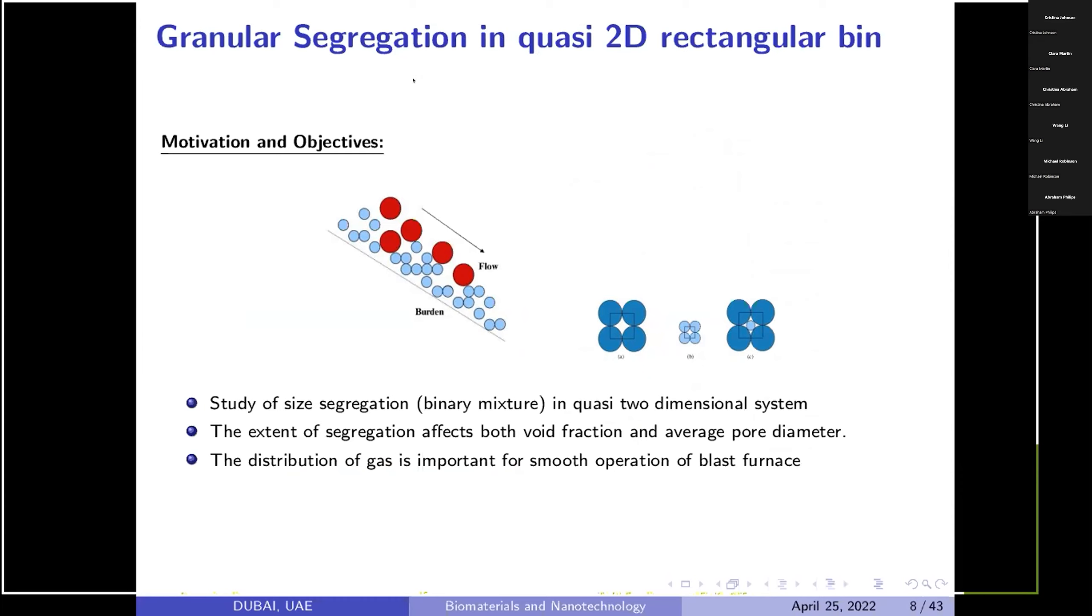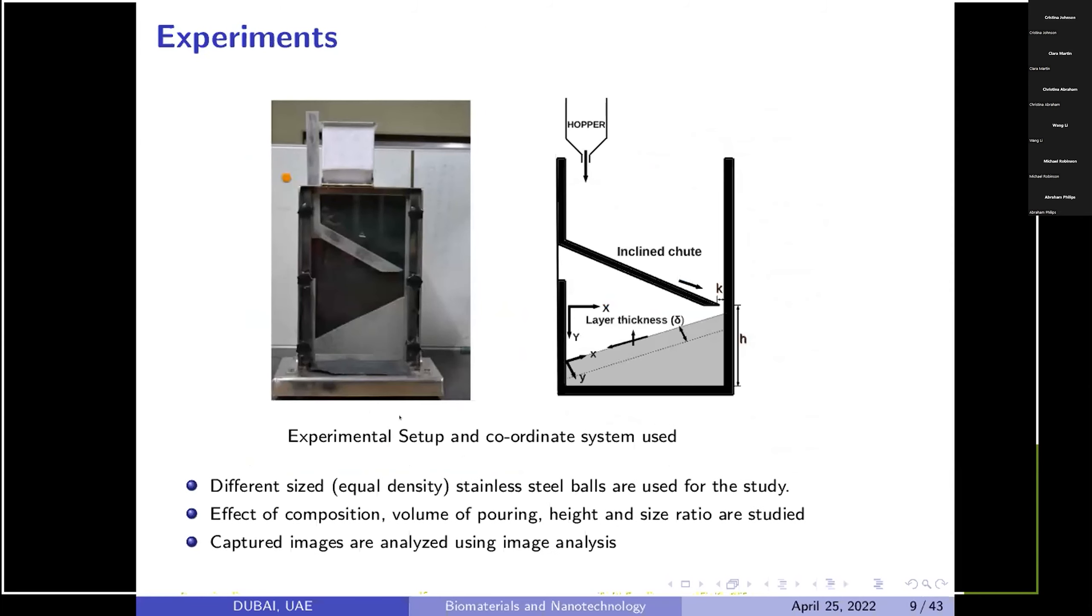To understand how segregation takes place, it is difficult to carry out experiments at large scale on blast furnace. So we decided to have a simplified model of blast furnace. This is experimental setup where the aluminum plate acts as an incline chute which is used in blast furnace. This acts as a hopper to supply the material and the gray part you can see on the schematic diagram is typically a formation of heap once the material is poured from the chute.